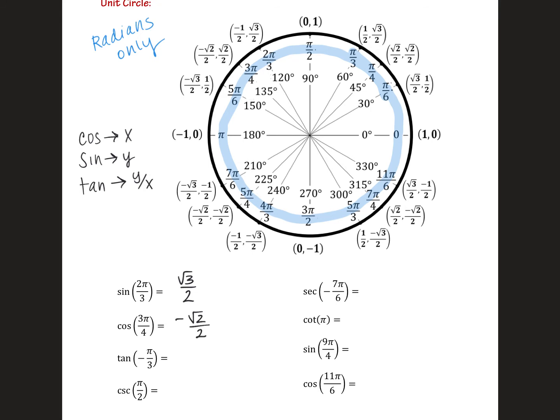Tangent of negative π over 3. So π over 3 is right here. The negative angle is simply the reflection of it across the x-axis. So negative π over 3 is down here at 5π over 3. And tangent is the y value divided by the x value. So I have negative square root of 3 over 2 divided by 1 half. The dividing by 2's will cancel out. So I'm just left with negative square root of 3 over 1, which is just negative square root of 3.